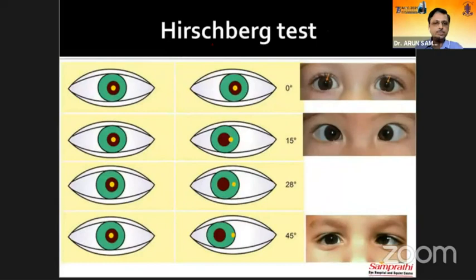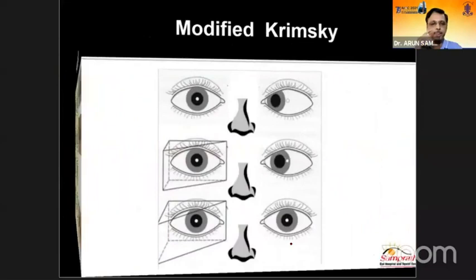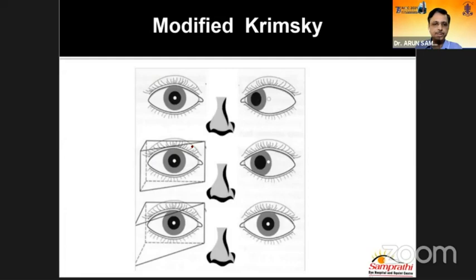The Hirschberg test measures the angle in terms of degrees. If the examiner sits right in front of the patient exactly behind the light source and the light is in the center of the pupil, the eye is orthotropic. If the light reflex falls at the pupillary border, you have a 15-degree squint; between pupil and limbus is 28 degrees; at the limbus is 45 degrees. The Krimsky test measures the same thing using prisms — you place a prism with the apex toward the deviation in front of the fixing eye.